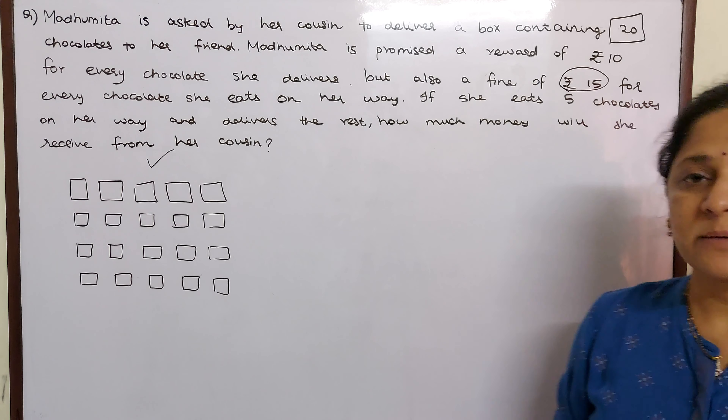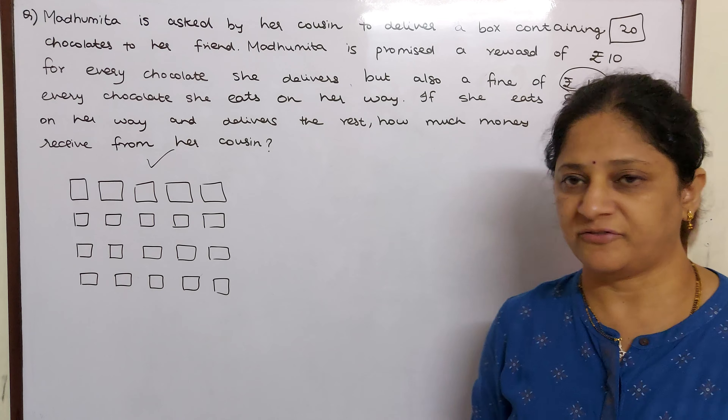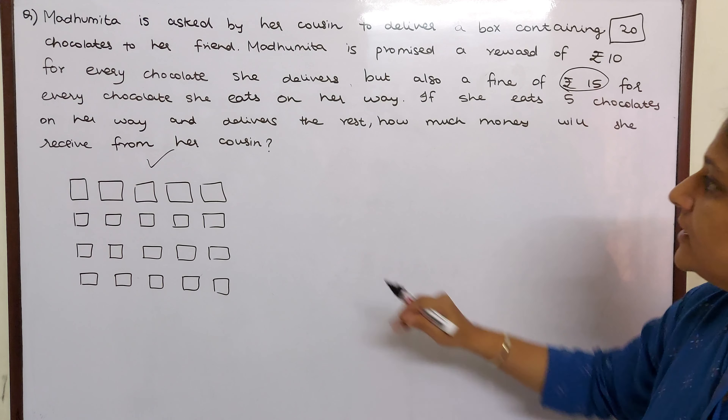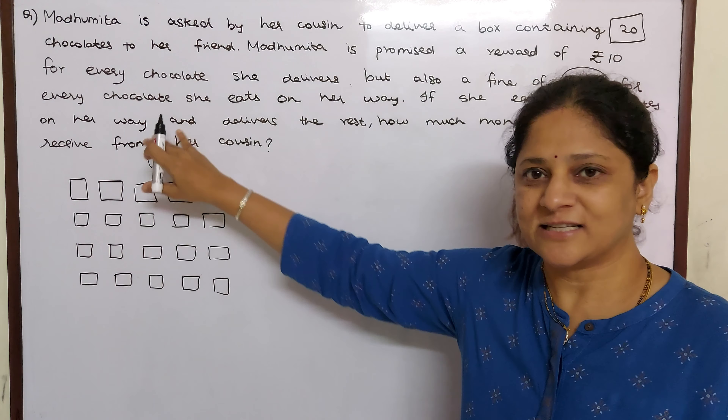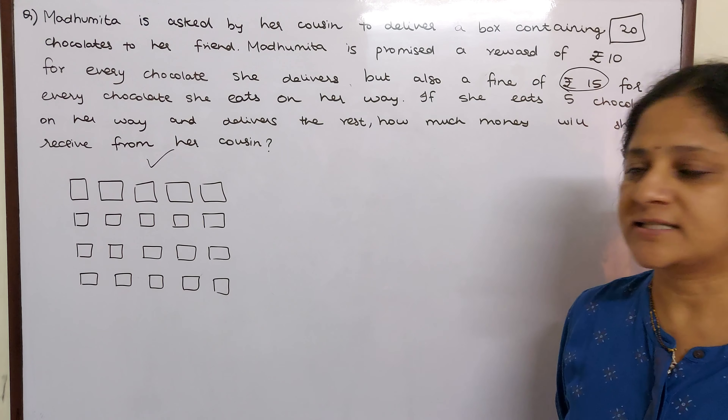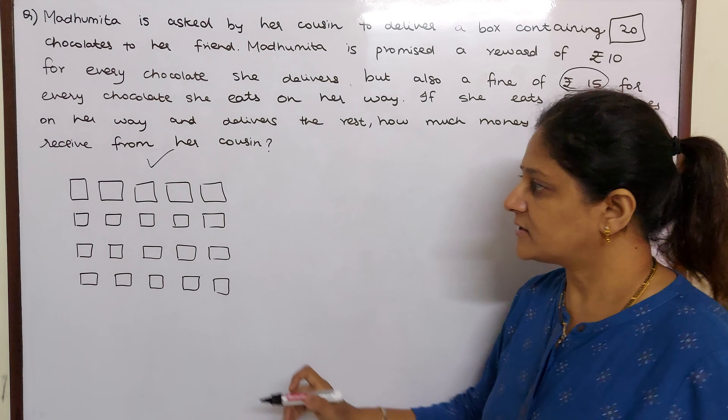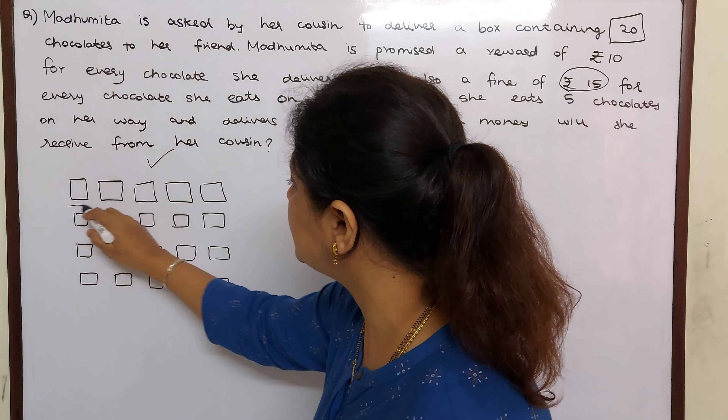That means if a chocolate is not delivered, for each chocolate you will be fined Rs. 15. So she eats 5 chocolates and delivers the rest. She has eaten these 5 chocolates. So how much will she deliver? She will deliver 15 chocolates.